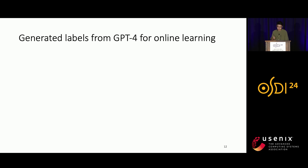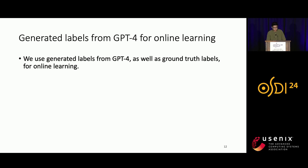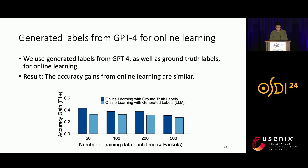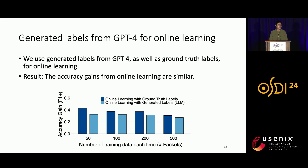We use these labels generated from GPT-4 to retrain a real in-network ML model via the online learning process. We find that even though generated labels from GPT-4 are not perfect — they have an average labeling accuracy of 70% to 80% — the accuracy gain from online learning with generated labels is comparable with the accuracy gain from online learning with ground truth labels from human labelers or dataset publishers. This indicates that these noisy, weak supervision labels can also be used effectively for online learning.